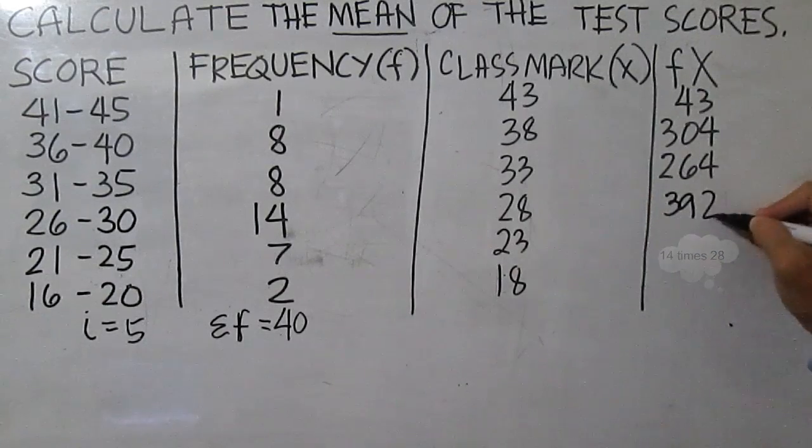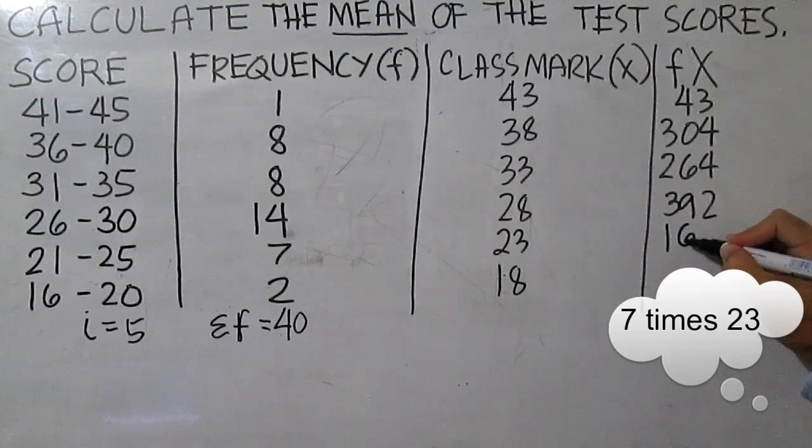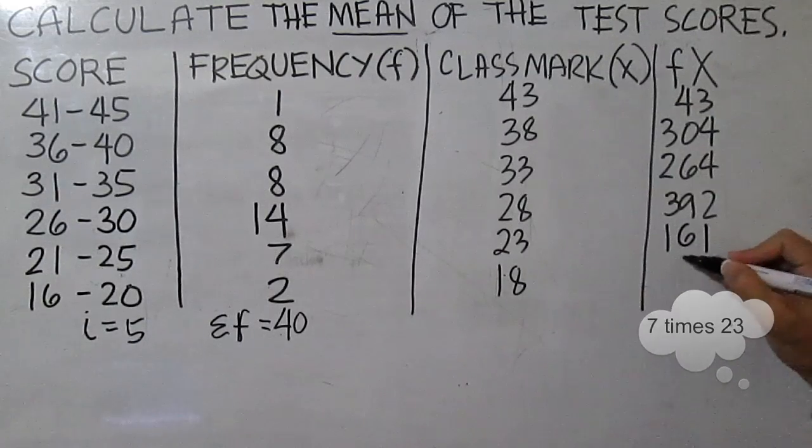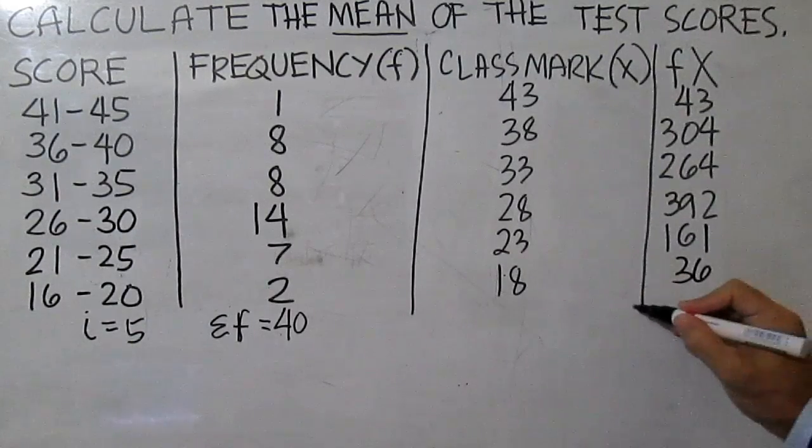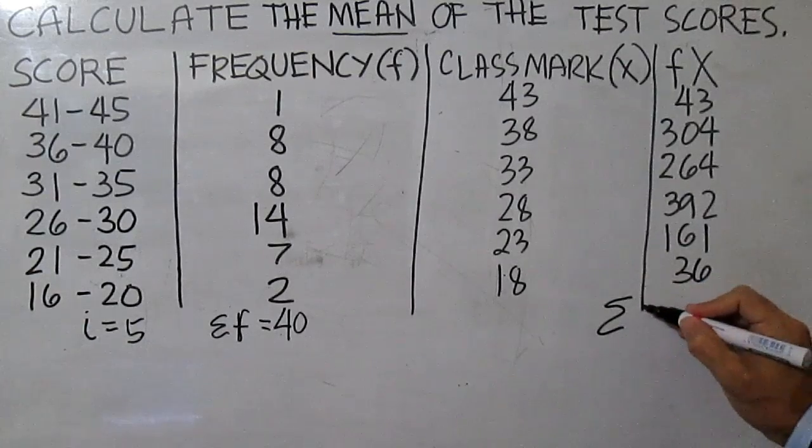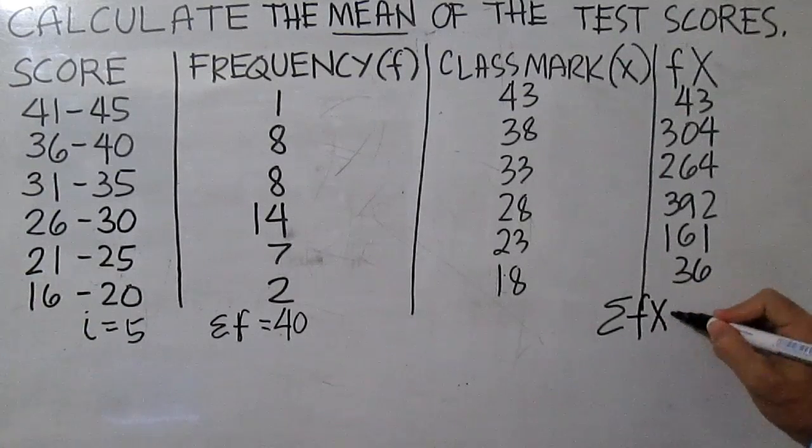14 times 28 is 392, 7 times 23 is 161, 2 times 18 is 36. Then find the sum and the sum is 1200.